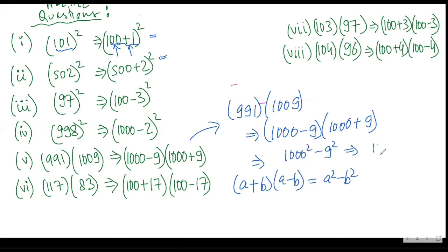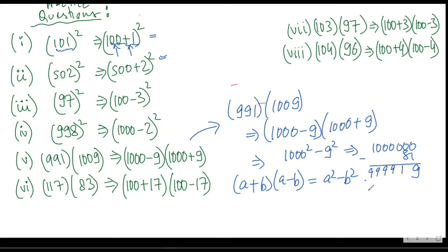So this would be 1000² minus 9², which is 1000000 minus 81. This would be 999919. So this would be the final answer. Any doubt? Mr. Satya, have you got the same answer? Yes.